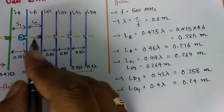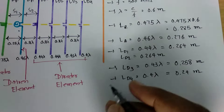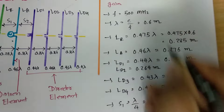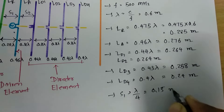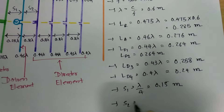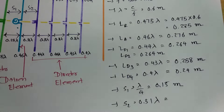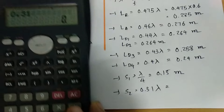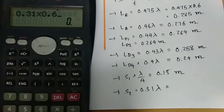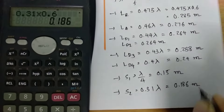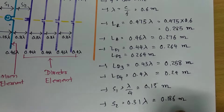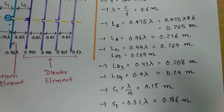Now we calculate the spacings. Spacing S1 is lambda by 4, so 0.6 divided by 4 equals 0.15 meter. Spacing S2 is 0.31 lambda, so 0.31 into 0.6 equals 0.186 meter. This is how we can calculate all data required to design the 6 element Yagi-Uda for 12 dB gain.